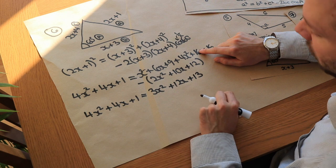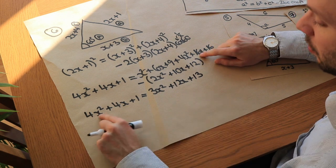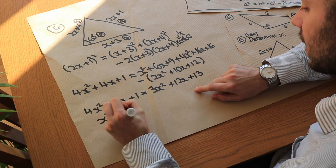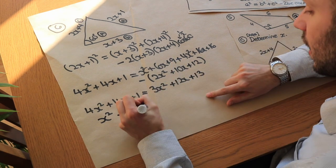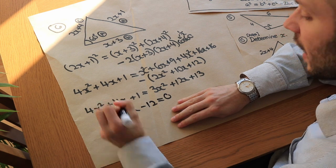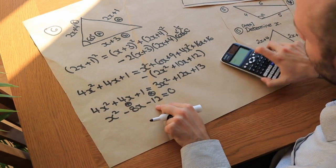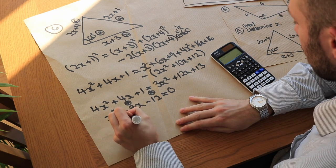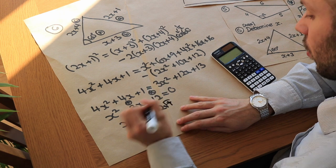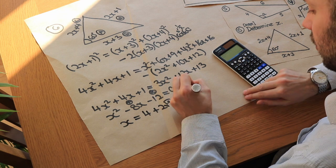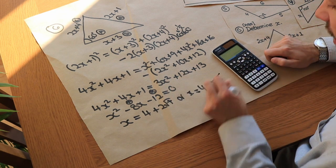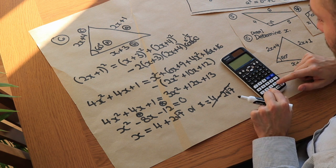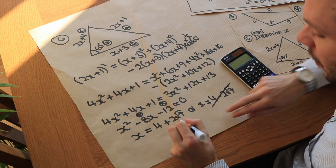Collecting everything gives the quadratic x² minus 8x minus 12 equals 0. This doesn't factorise, so we use the quadratic formula, giving x equals 4 plus 2√7 or x equals 4 minus 2√7. The second solution is approximately minus 1.29, which would produce a negative side length and is therefore not valid. So the answer is x equals 4 plus 2√7.